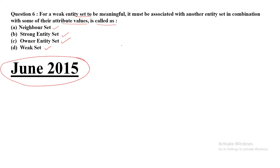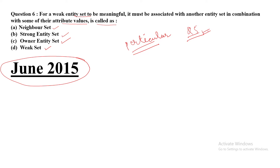First, you must know what is an entity set. An entity set is a collection of all entities of a particular entity type — that means similar type of entities grouped together form an entity set. If you want to know what is entity type, go to question number 5 where I have explained it.